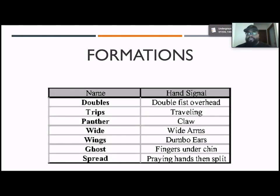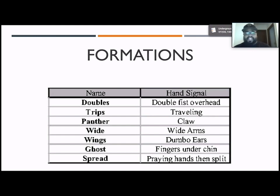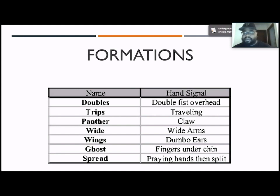These are some of the formation signals we use. For doubles, we had double fist overhead. For trips, we could do traveling — like a traveling call in basketball. For Panther, we do a claw. Wide arms for wide — we spread them wide. Wings, you've got dumbo ears, which is all fun — the kids love that one. Goes is fingers on the chin. And Spread is praying hands and then coming across. These are all formations we were able to use to get our receivers, our line, and our offense set to run the play.